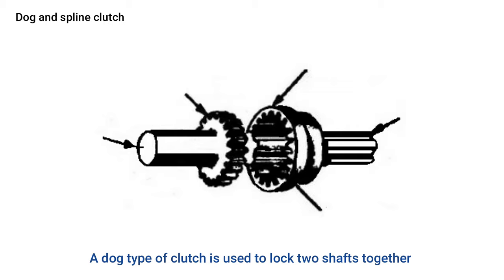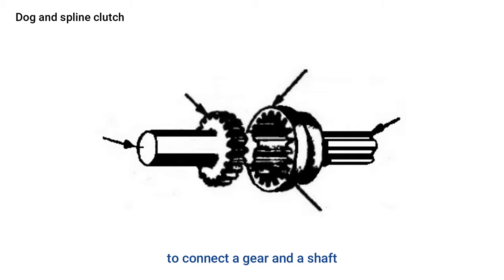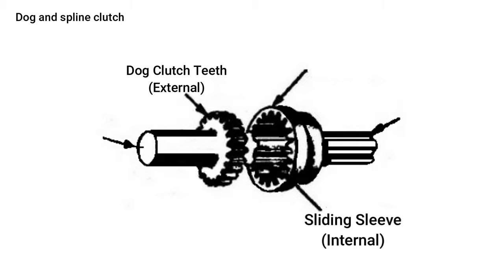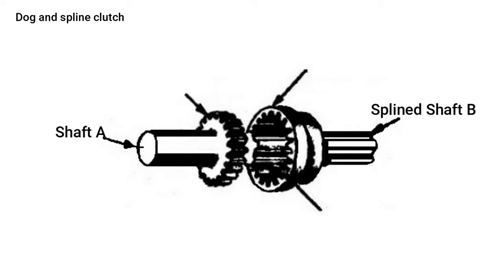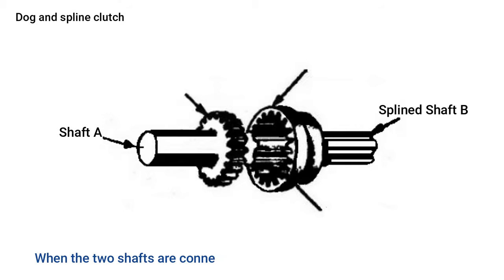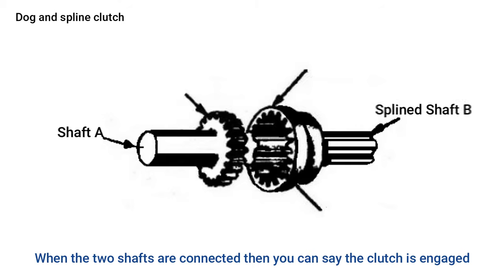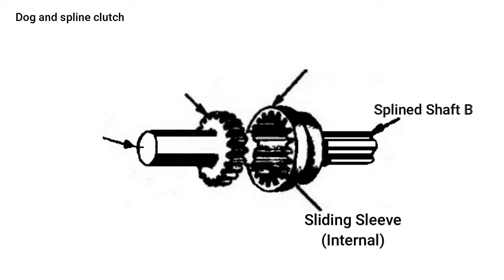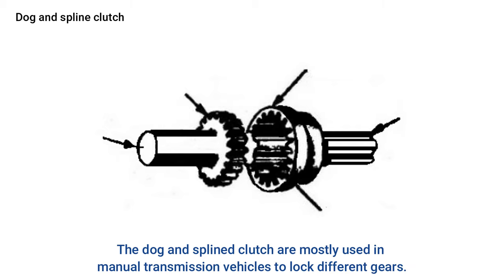The dog and spline clutch is used to lock two shafts together or to connect a shaft. It has two parts: the dog clutch, which has external teeth, and a sliding sleeve with internal teeth. Both shafts are designed so that one rotates the other at the same speed without slipping when connected, meaning the clutch is engaged. To disengage, the sliding sleeve moves back on the splined shaft, losing contact with the driving shaft. This type is mostly used in manual transmission vehicles to lock different gears.